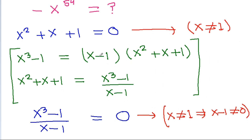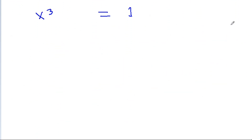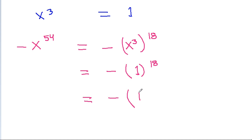And we have to find the value of minus x power 54. It is minus of x power 54, which equals x cubed power 18. And since x cubed equals 1, it is minus of 1 power 18, which is 1. So the answer is minus 1.